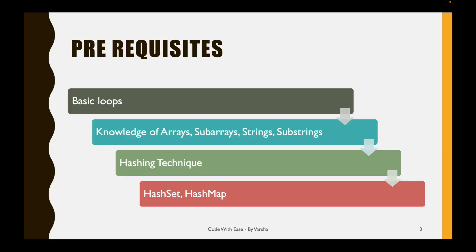Coming to the prerequisites: the sliding window algorithm is mostly used with arrays and strings, so knowledge of basic loop constructs — for loop and while loop — is important. Since we deal with arrays and substrings, one must understand what a subarray, substring, and subsequence mean. For more advanced sliding window questions, there is usage of hash maps and hash sets, so knowing those data structures is also good to have.